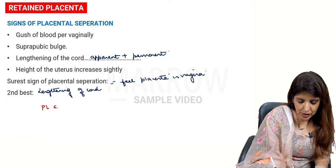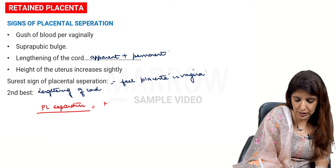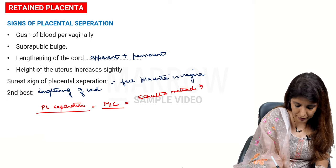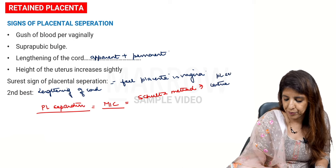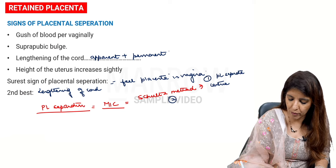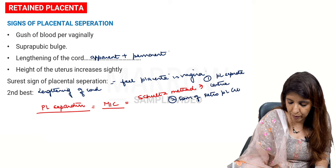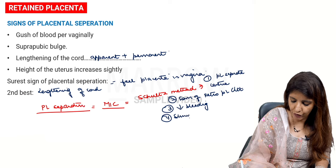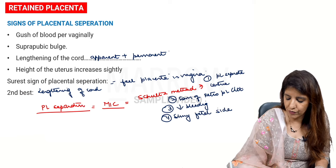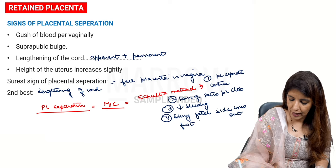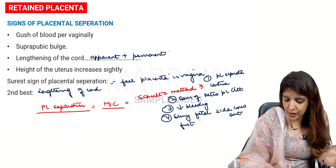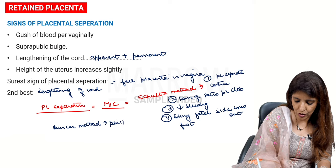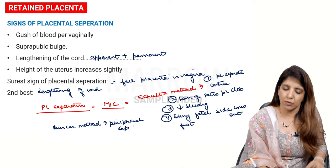The most common method of placental separation is the Schultz method — a central method where the placenta separates from the center, forming a retroplacental clot. Because of this clot, there is less bleeding, and the shiny fetal side comes out first. Bleeding is apparent only after the entire placenta has separated. In contrast, the Duncan method involves peripheral separation. The Schultz method is more common.